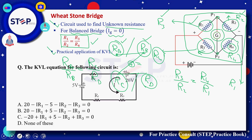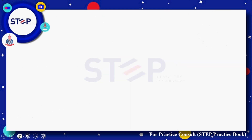For the MCQ on KVL equation for a given circuit: applying the previously learned conventions — positive EMF when traversed negative to positive, negative for resistive components — the analysis of the given circuit yields option alpha as the correct KVL equation.